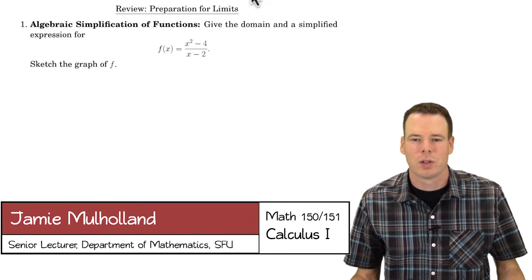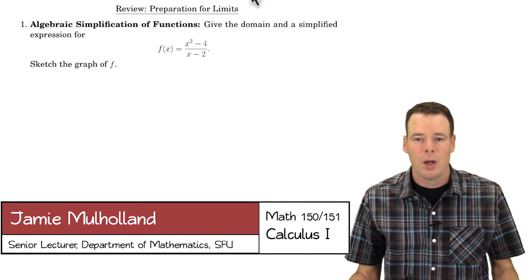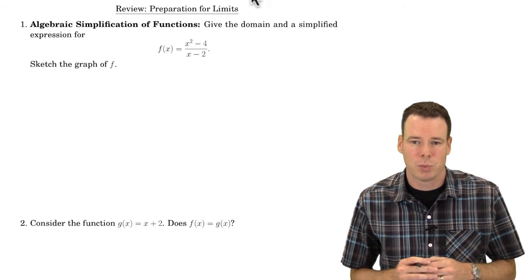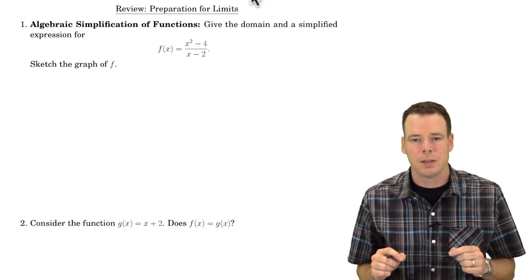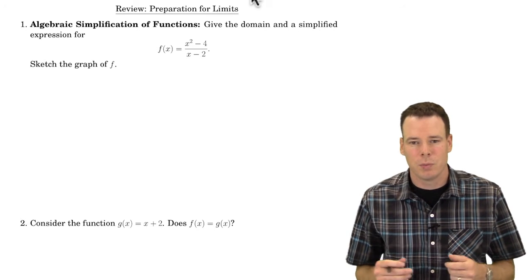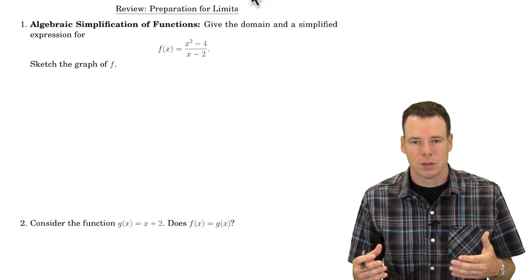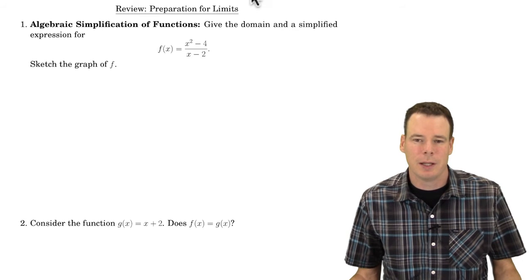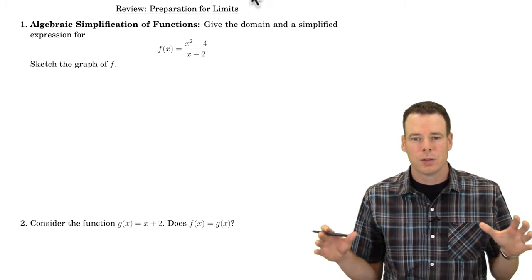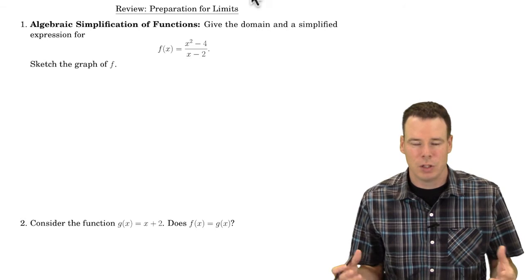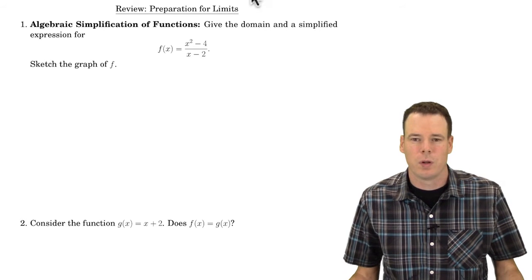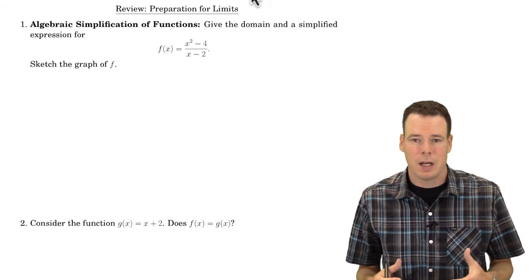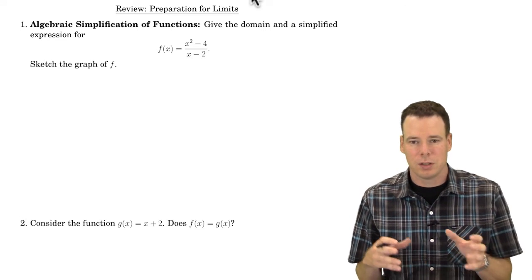Hi everyone, welcome back. In this section we're going to continue our review of functions. In particular, we're going to look at how to simplify expressions for functions. This is in anticipation of what we're going to need when we get to limits — we'll need to work with the expression for a function, manipulate it, and simplify it in certain ways. This lecture is one of three just-in-time review lectures we're going to do.